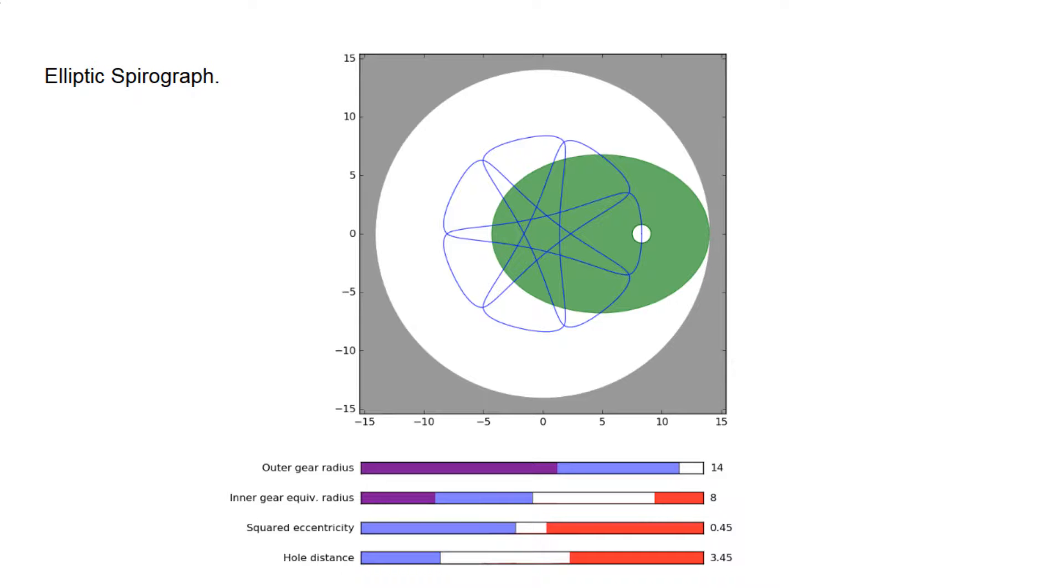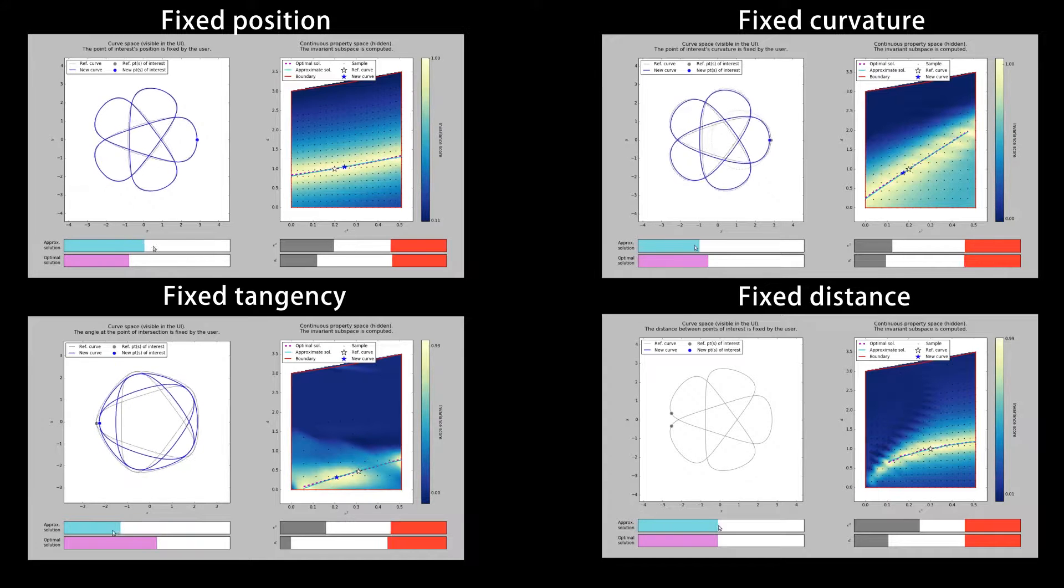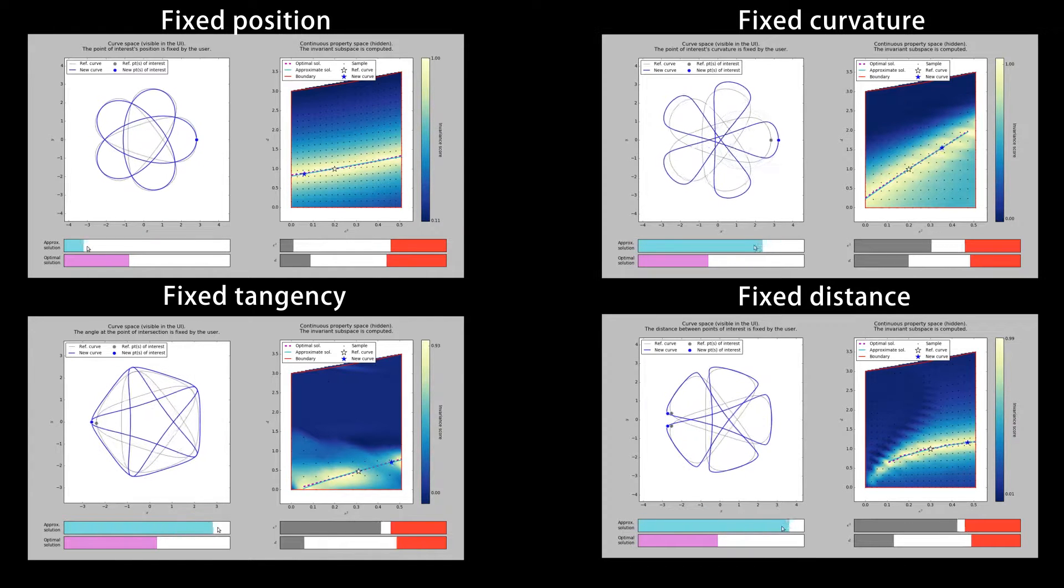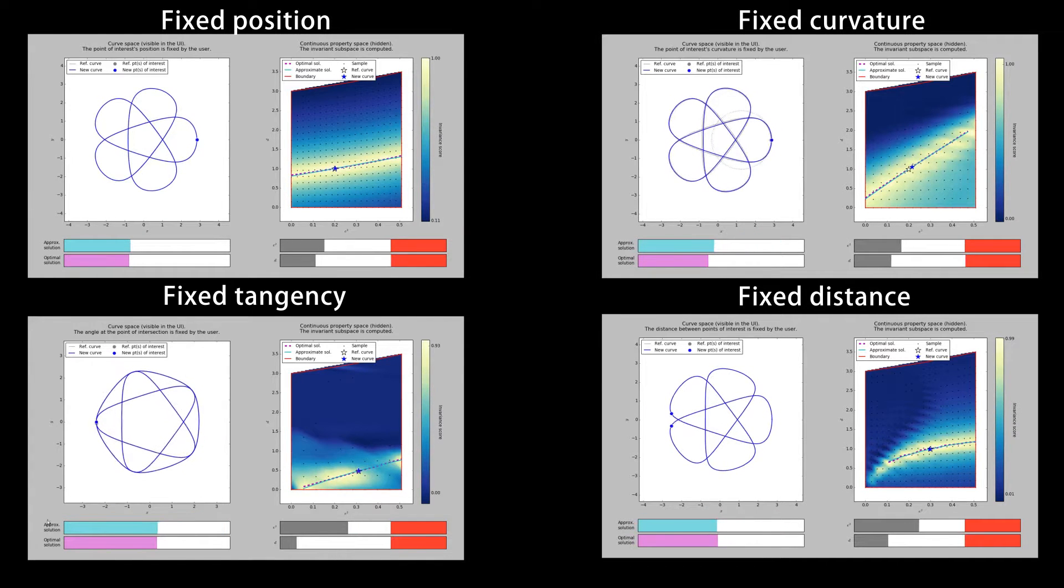We now show some results. First, here are some examples of curves being modified under user-prescribed specifications. The first examples correspond to a spirograph with an elliptic gear. For each example, the panel on the right shows the exploration taking place in the invariant subspace.